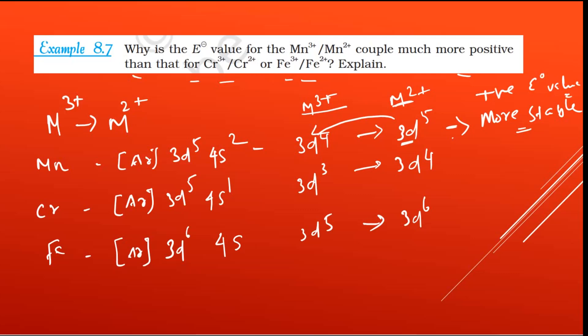And 3d³ to 3d⁴, and 3d⁵ to 3d⁶. So 3d³ to 3d⁴, it is not that much of importance because 3d³ is also unstable, 3d⁴ is also unstable. And 3d⁵ to 3d⁶.